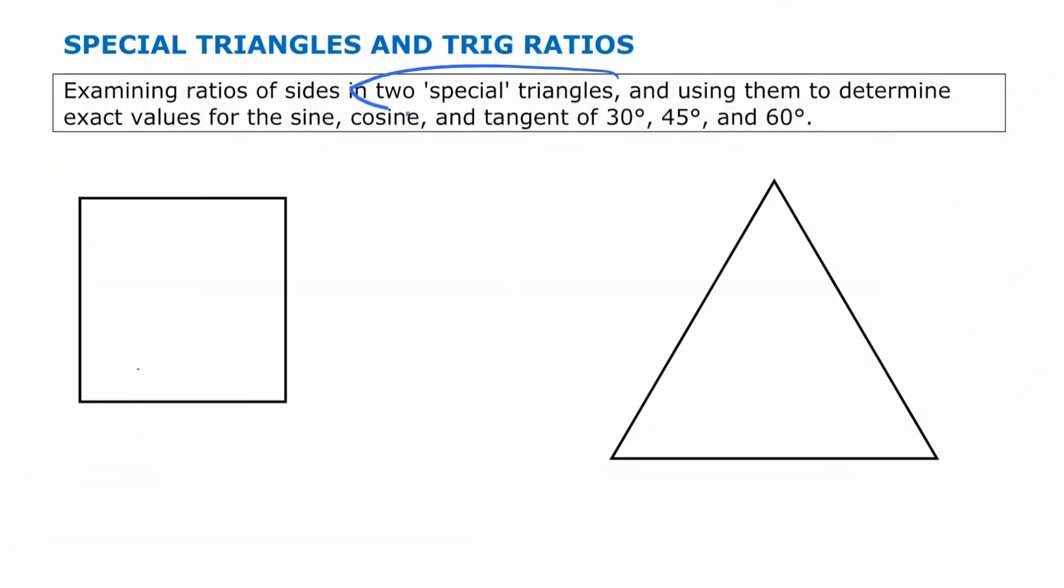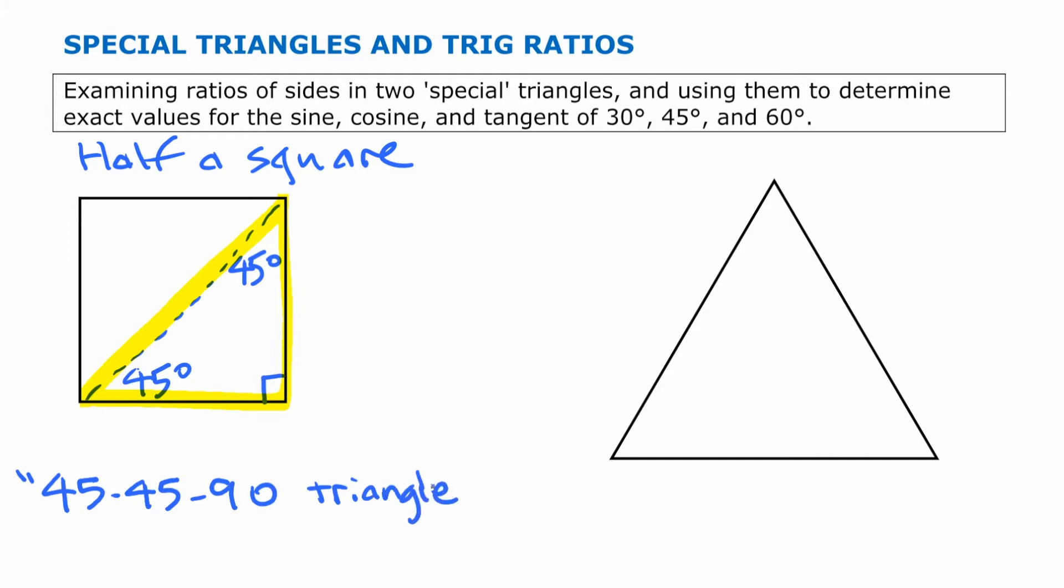Now, you might look and say, what is this guy talking about? Those things aren't even both triangles. What we are going to look at though is creating two special triangles, the first one of which is half a square cut diagonally like that. So we are talking about this triangle right here. The angles in that when you cut it in half are 45, since the original angles were 90. So this is often called a 45-45-90 triangle.